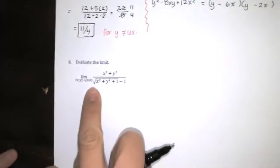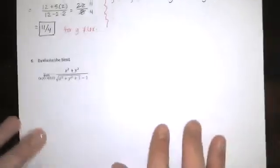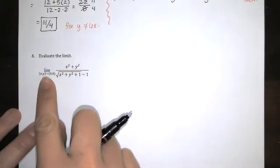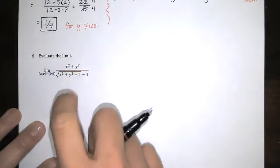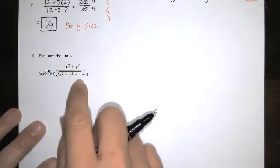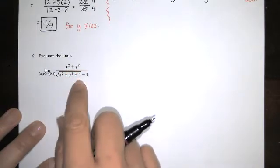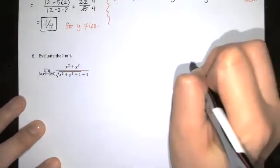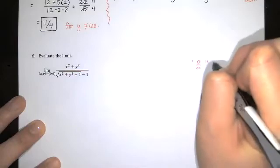So in this one, we're asked to evaluate the limit as well. Let's look at it. If I substitute in 0, 0, do I get a 0 over 0 indeterminate form again? I think I do. I get a 0 in the numerator. That's 0 squared plus 0 squared plus 1. Square root of 1 is 1. 1 minus 1 is 0. So this is another 0 over 0 indeterminate form.